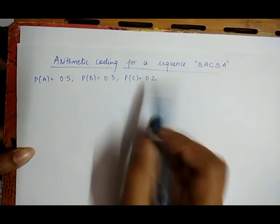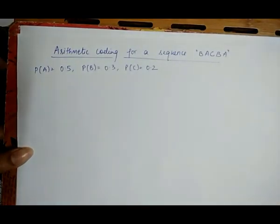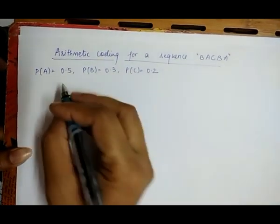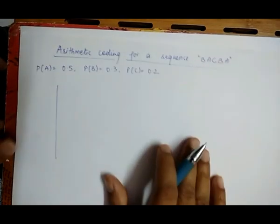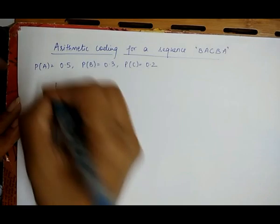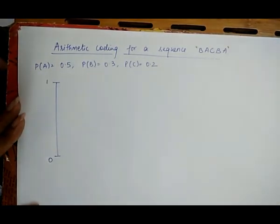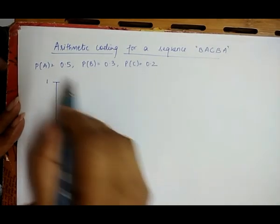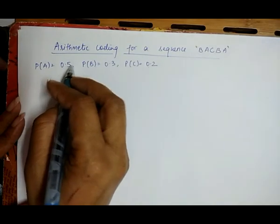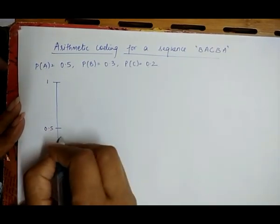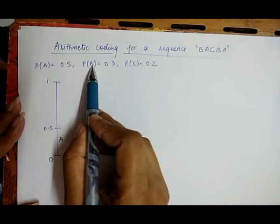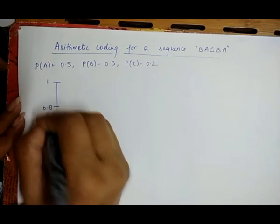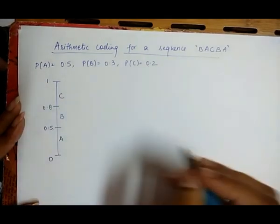As we know, the tag value always lies between 0 and 1, so we make an interval with lower bound 0 and upper bound 1. Within this interval we define all the symbols A, B, and C. First we place A with a range of 0.5, so A occupies [0, 0.5]. Then B is placed by adding 0.3 to 0.5, giving 0.8, so B is in [0.5, 0.8]. The remaining part is C.